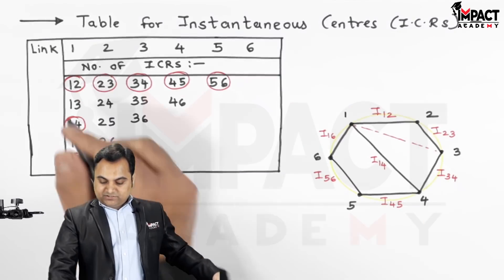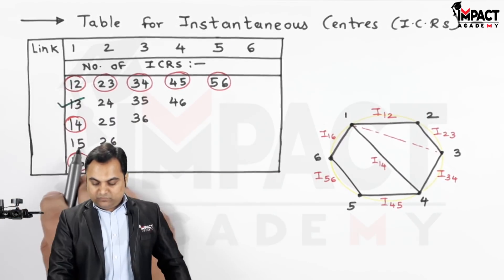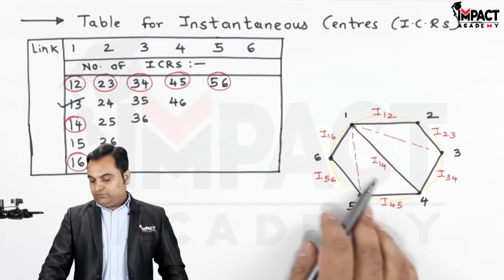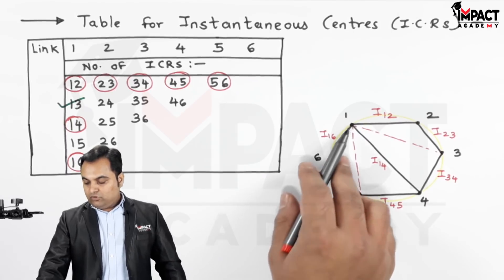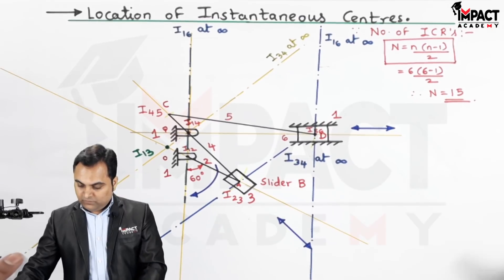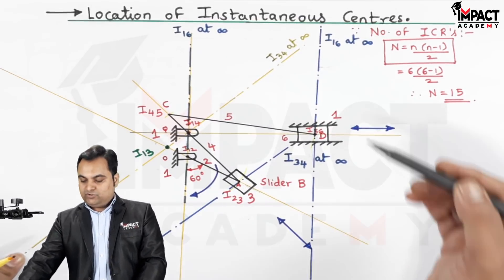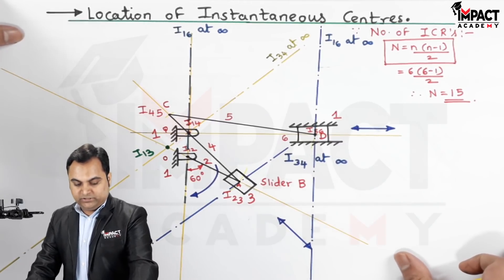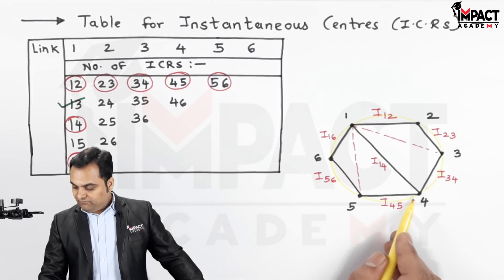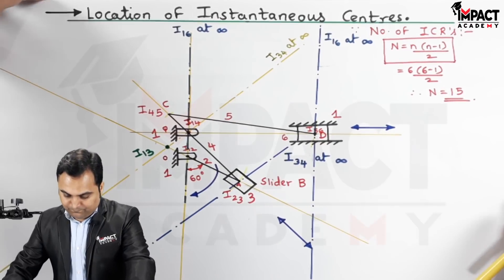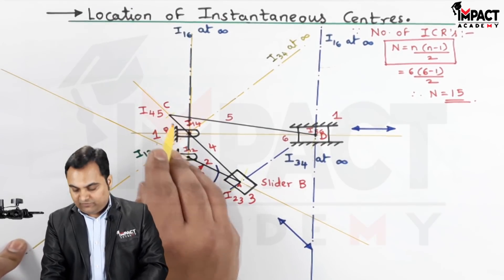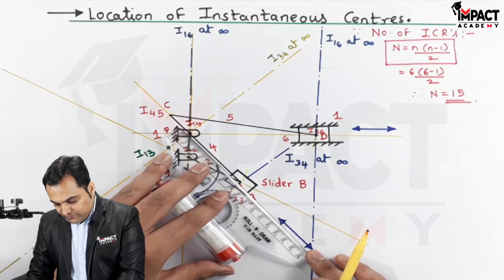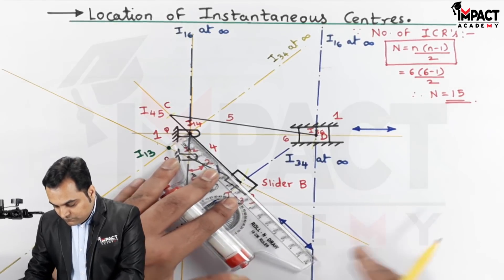For I15, we use triangles 1-6-5 and 1-4-5. I16 and I56 already lie on the vertical line, so I15 lies on that vertical line. For the second triangle, we join I14 and I45. Extending the line through I14 and I45 to cut the vertical line through I16 and I56 gives us I15.